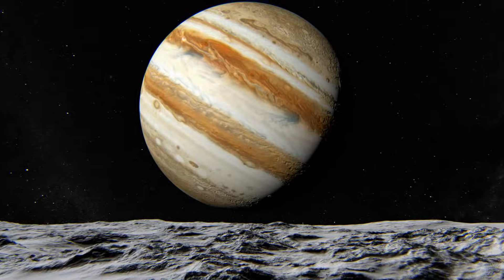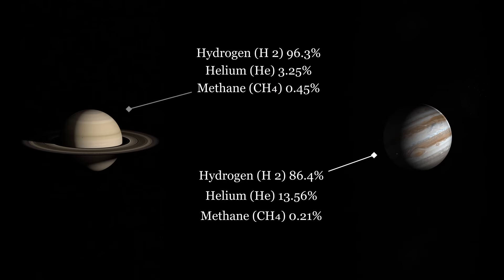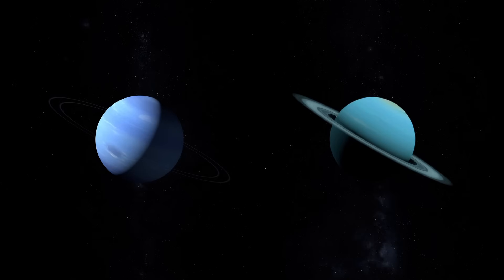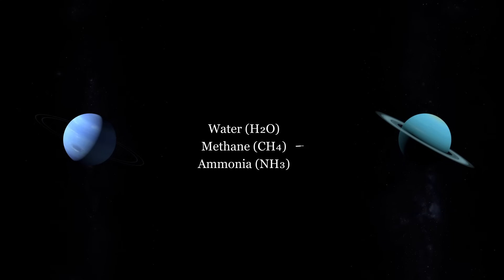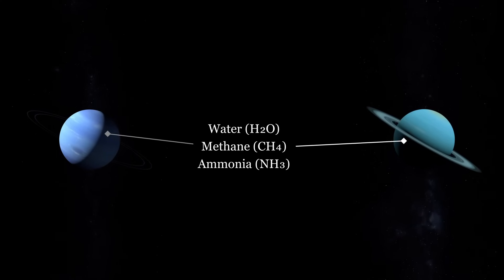These are not gas giants. They are ice giants. While Jupiter and Saturn are mostly hydrogen and helium gas, Uranus and Neptune are fundamentally different. More than 80% of their mass is a hot, dense fluid of icy materials—water, methane, and ammonia—crushed under immense pressure above a small rocky core.